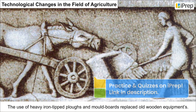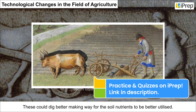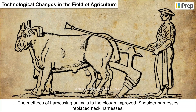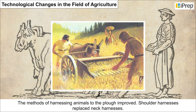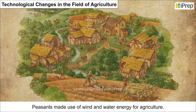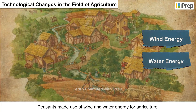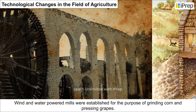These could dig better, making way for soil nutrients to be better utilized. The methods of harnessing animals to the plow improved — shoulder harness replaced neck harnesses. Use of iron horseshoes prevented foot decay of horses. Peasants also made use of wind and water energy for agriculture, and wind and water-powered mills were established for grinding corn and pressing grapes.